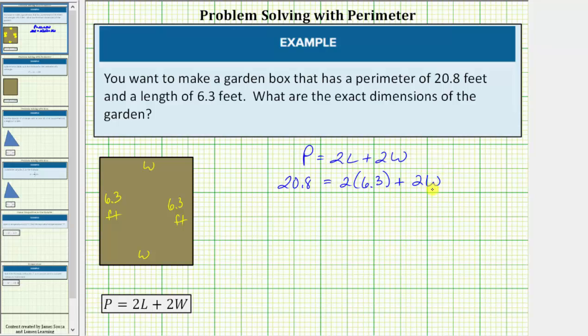Once we solve the equation for w, we'll know the exact dimensions. Let's first simplify the right side. 2 times 6.3 is 12.6. So we have 20.8 equals 12.6 plus 2w.